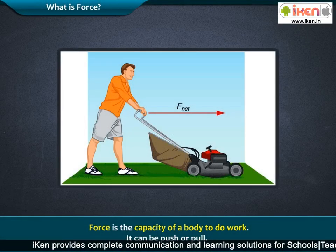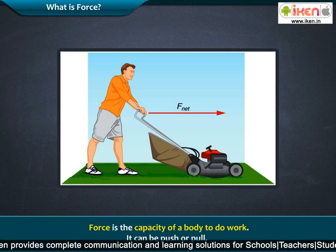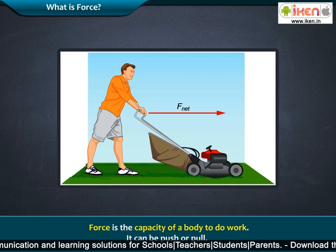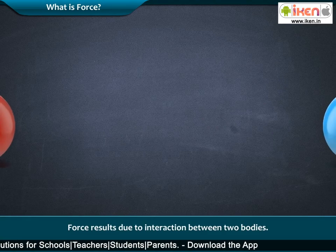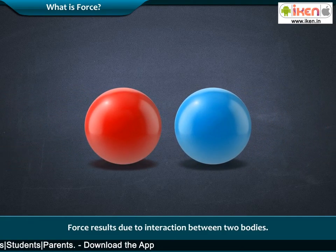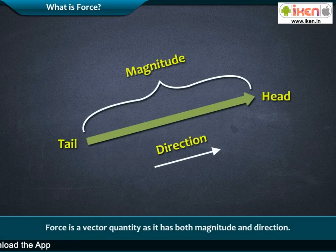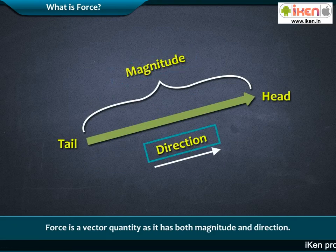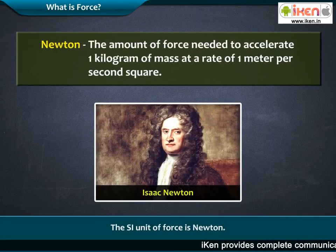Force is the capacity of a body to do work. It can be a push or a pull. Force results due to interaction between two bodies. Force is a vector quantity as it has both magnitude and direction. The SI unit of force is Newton.